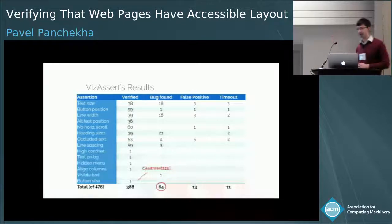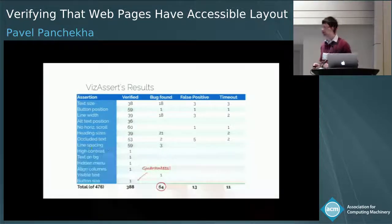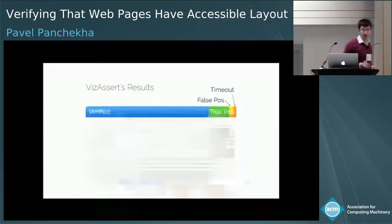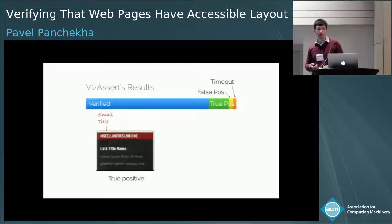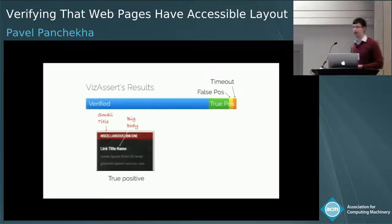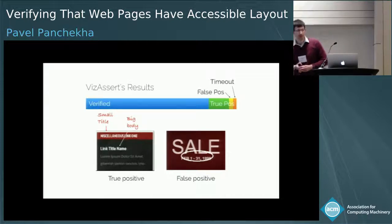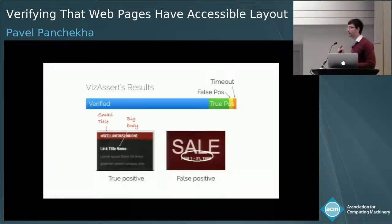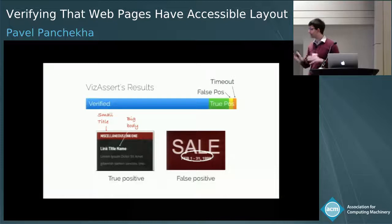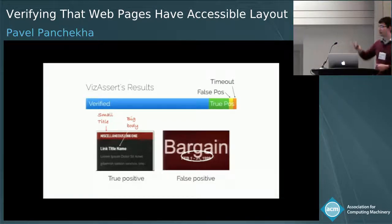We also have 3% false positives and 2% timeouts. Here's an example of a true positive: a sidebar title in a smaller font than the sidebar subtitle, violating the header hierarchy assertion. And here's a false positive: VisAssert thinks the word 'sale' and a date range might overlap, but of course they do not. The reason is that VisAssert does not reason about the rendering of individual English letters — it thinks about spans of text in one font. It doesn't know that 'sale' has no descenders, but if the word were 'bargain,' there would be a text overlap, which is the false positive VisAssert is picking up on.